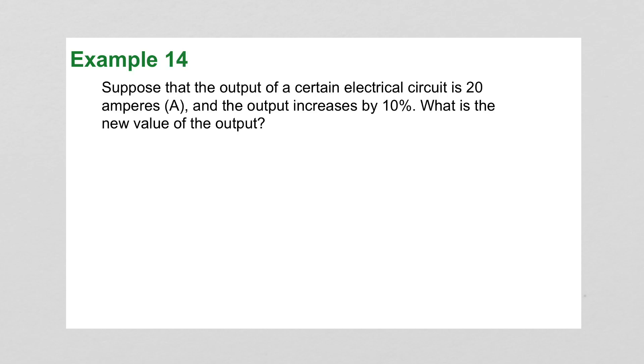Example 14 says, suppose the output of a certain electrical circuit is 20 amperes and the output increases by 10%. What is the value of the output? So the input, that's I over the output 20, and it says it increases by 10%. So the input would end up being 2 amps. So the new value would be our original 20 amps plus 2, which is 22 amps.